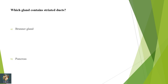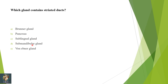Next: which gland contains the striated duct — Brunner's gland, pancreas, sublingual, submandibular, or von Ebner? Striated ducts are needed where we modify secretion. In the submandibular gland, which is a mixed gland but predominantly serous, secretion is modified. So striated ducts are present there. Correct option is submandibular gland.